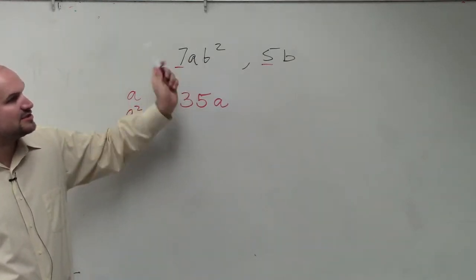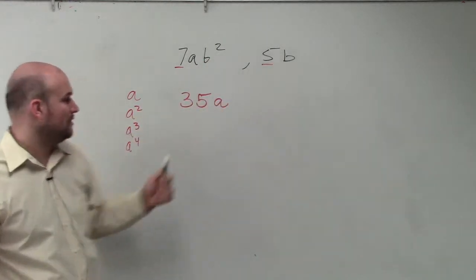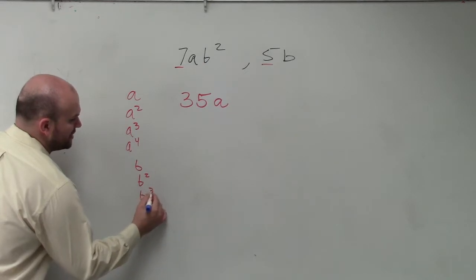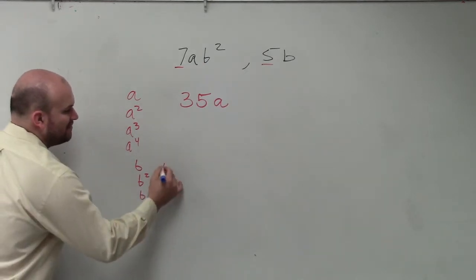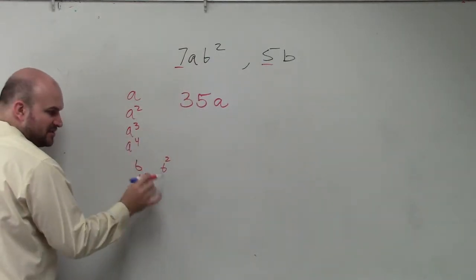Then let's look at the lowest term that both b squared and b divides into. Well, we know b divides into b, b squared, b cubed, and so forth. However, b squared—the lowest term that b squared divides into is b squared.